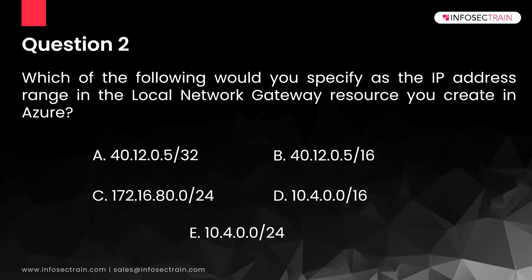The local network gateway resource is simply the representation of your on-premise network in your VPN. That resource represents your on-premise network. So you specify the IP address range of your on-premise site. You also specify the public IP address of your on-premise VPN device in the local network gateway, along with the private IP range of your on-premise datacenter.